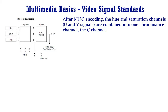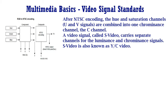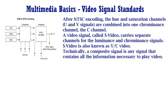After NTSC encoding, the hue and saturation channels, i.e. U and V signals, are combined into one chrominance channel, i.e. the C channel. A video signal called S-video carries separate channels for the luminance and chrominance signals; S-video is also known as YC video. All color and other information must be combined into one YUV channel, which is called the composite signal, and is used to play on old black and white televisions. Technically, a composite signal is any signal that contains all the information necessary to play video, whereas any one individual channel of component or YC video is not sufficient to play video.